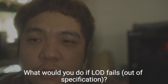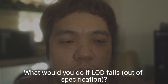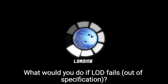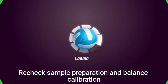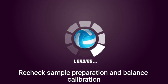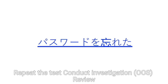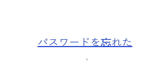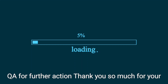Question 15: What would you do if LOD fails out of specification (OOS)? Recheck sample preparation and balance calibration, repeat the test, conduct an OOS investigation, review environmental and instrument conditions, and report to QA for further action.